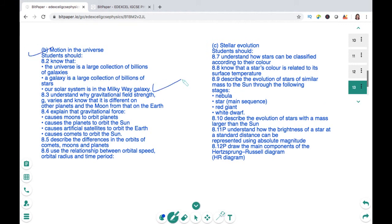In motion in the universe, we'll look at the Milky Way galaxy, components of a solar system, different objects that make a solar system like planets, comets, asteroids, and the relationship between orbital speed, radius, and time period.